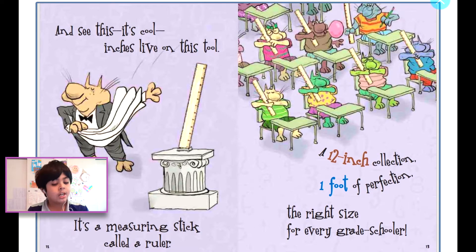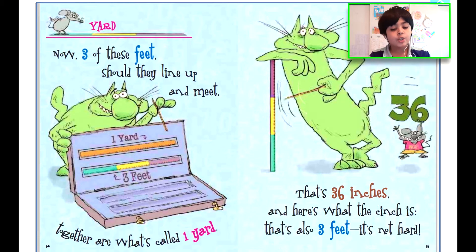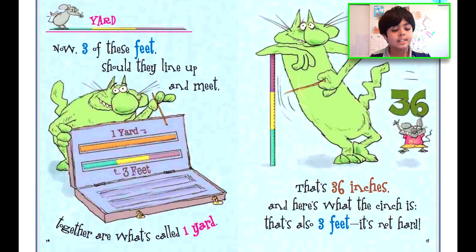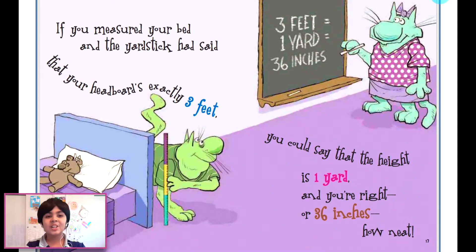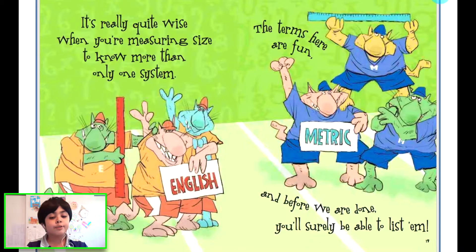Now three of these feet should they line up and meet together are what's called one yard. That's 36 inches, and here's what the cinch is: that's also three feet, it's not hard. If you measure your bed with a yardstick instead, that your headboard's exactly three feet, you could say that the height is one yard and you're right, or 36 inches how neat. You see on the blackboard it says three feet equals one yard equals 36 inches, and that's what the teacher is showing.